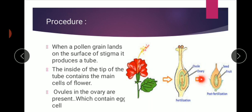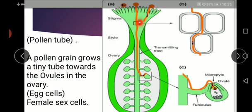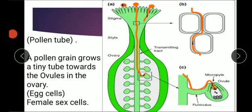The fertilization process starts, as you can see in this third picture. Now we are going to study how a pollen tube is formed, how it grows, and how the process of fertilization occurs. They are telling you the structure of stigma, style, and ovary. A pollen grain grows inside a tiny tube towards the ovules in the ovary. In the ovary, egg cells are present — the female sex cells, the female gametes.